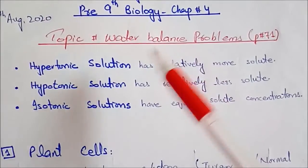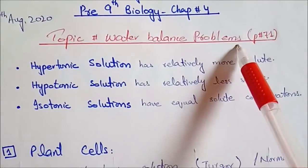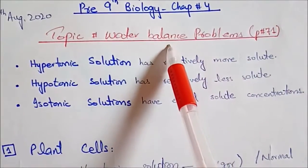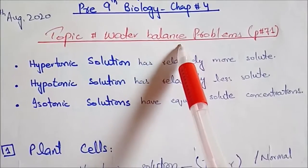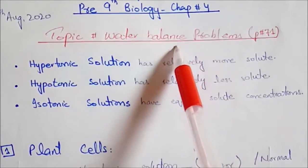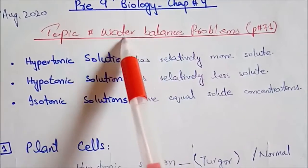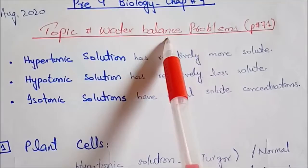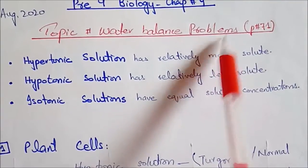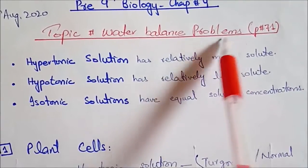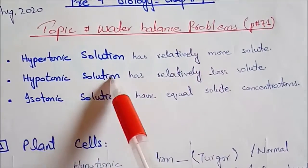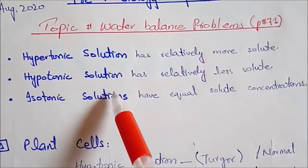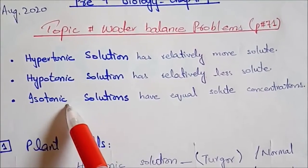Usme humne diffusion, facilitated diffusion aur osmosis padha tha. Aaj ka hamara topic hai water balance problems, page number 71. Lekin is topic ko samajhne ke liye — plant cells aur animal cells mein agar water balance na ho sake to kya problems hote hain — pehle hume different types of solutions samajhne padenge.